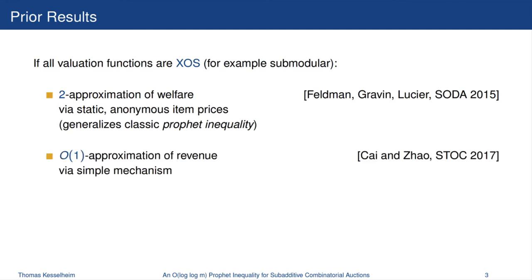For revenue, the problem isn't quite as easy. But Tsai and Zhao gave a constant factor approximation to the optimal revenue via a simple mechanism. It's not quite as easy as the static anonymous item prices by Feldman, Graven, and Lucier, because they also have to use an entry fee for each of the buyers. But it is still not super complicated as a mechanism and easy to explain.